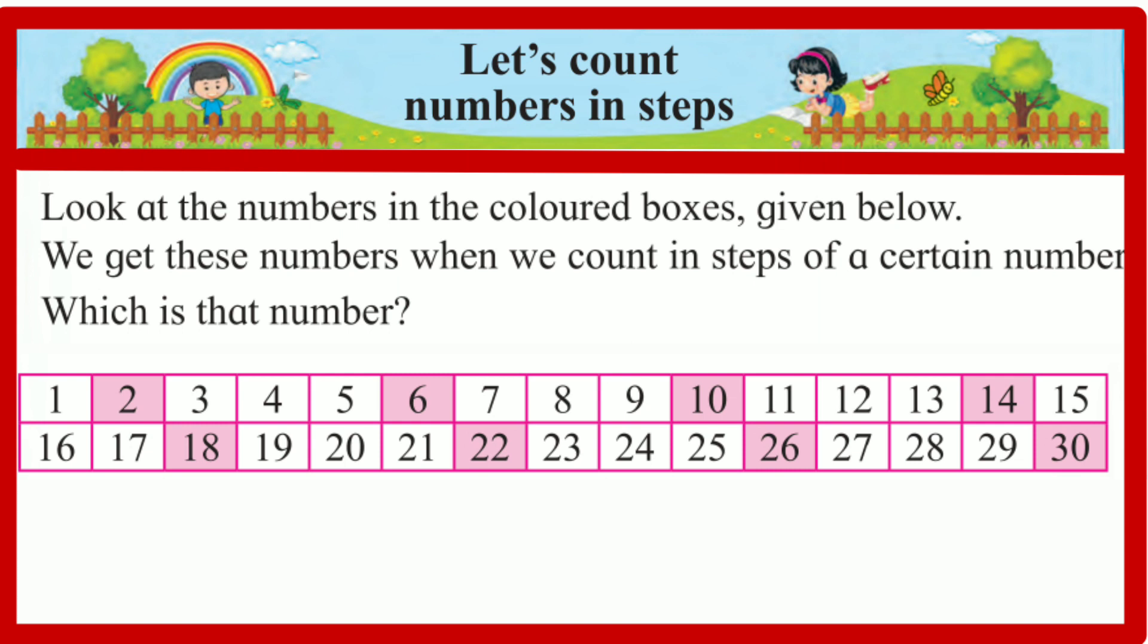If we count 4 numbers after the number 2 we get the number 6. On counting 4 numbers after 6 we get 10. Here, by counting 4 forward every time, we get each next number.